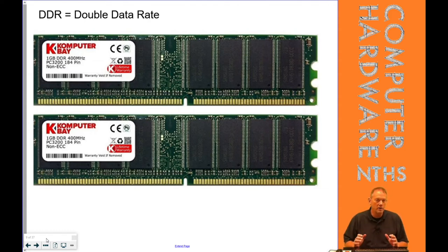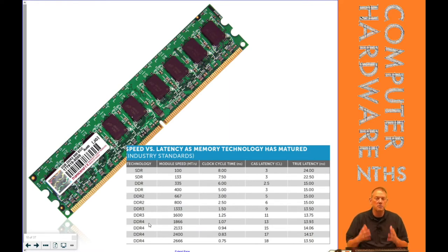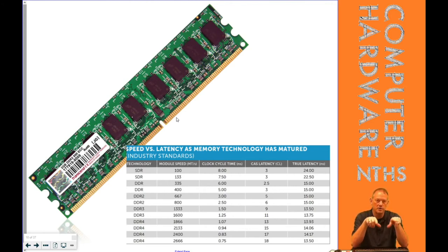It just means it's a new generation. Generation one of DDR is just called DDR. Generation two was called DDR2, then DDR3, then DDR4. The size of the sticks didn't really change; however, the speeds changed dramatically. The number of gold connections changed as they evolved, and the notch moved slightly with each generation so that you couldn't put the wrong generation into a motherboard.